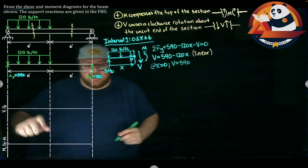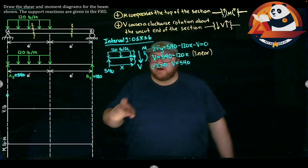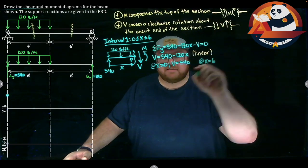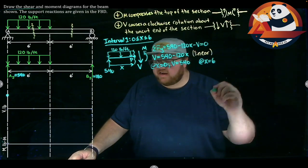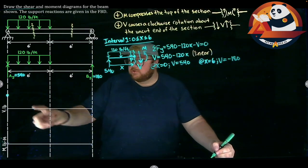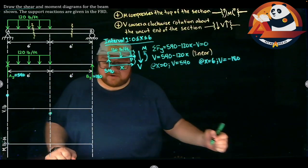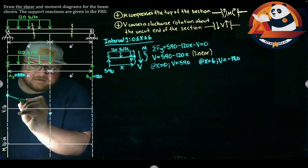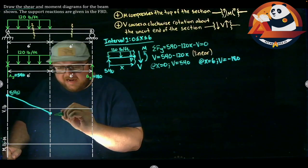My first plot point is 540. Then at x equals 6: V = 540 minus 120 times 6, which gives V equals negative 180. So I'm going from 540 all the way down to negative 180. Since it's a straight line, I just connect the dots — from 540 down to negative 180 — and fill in those values. That's the first section's shear diagram.